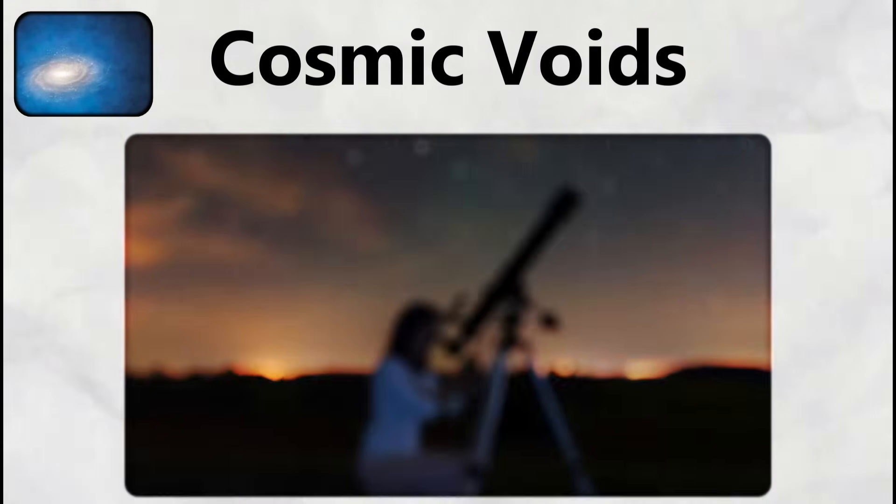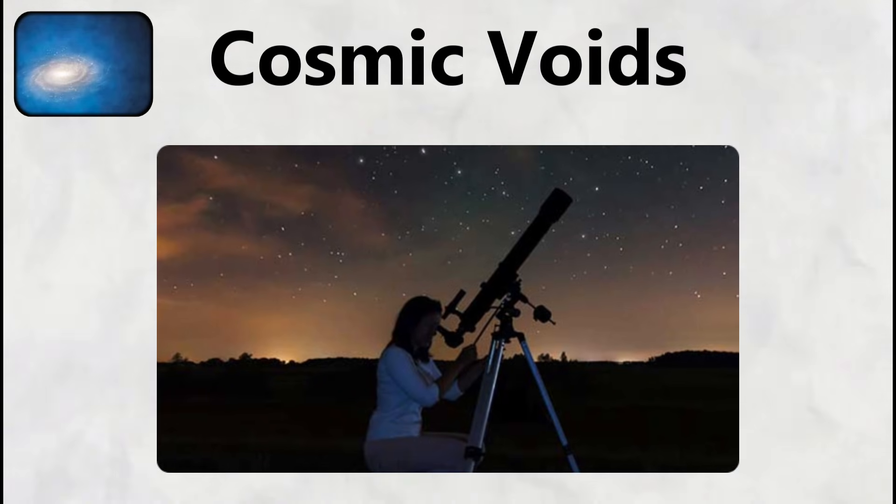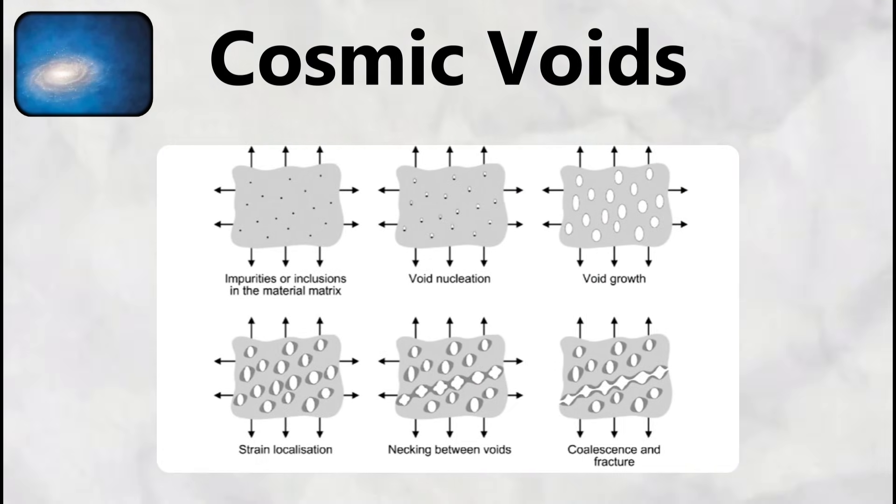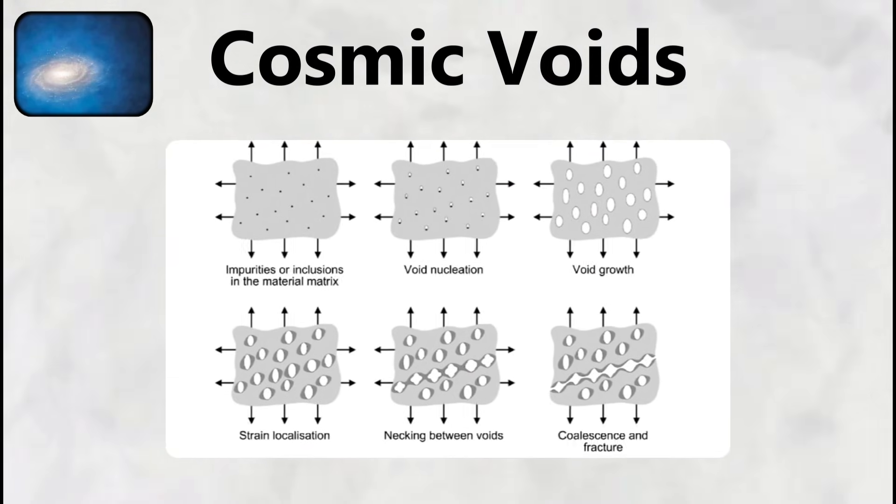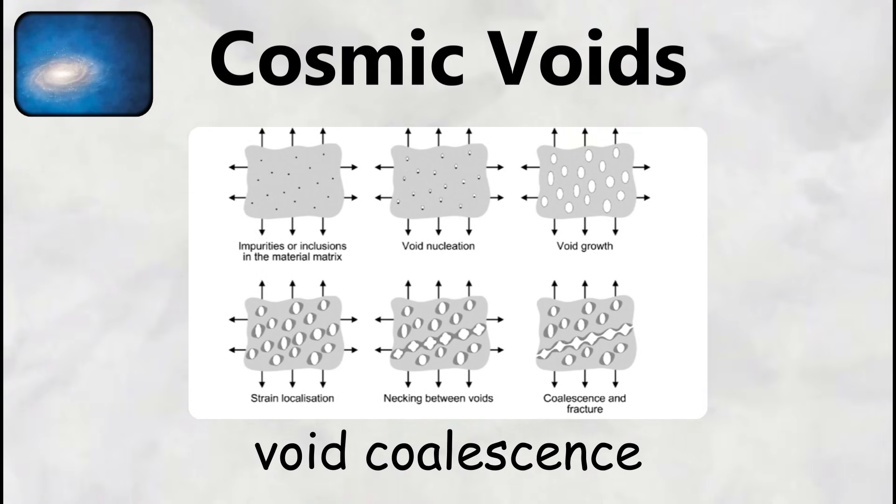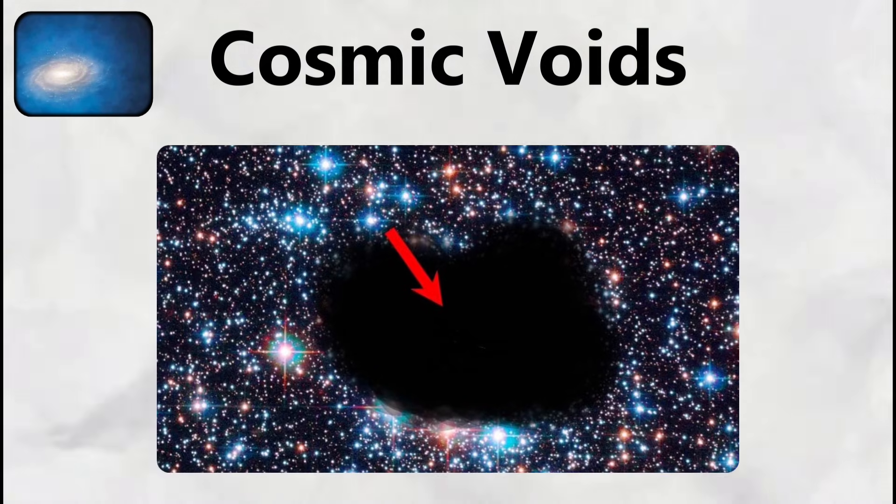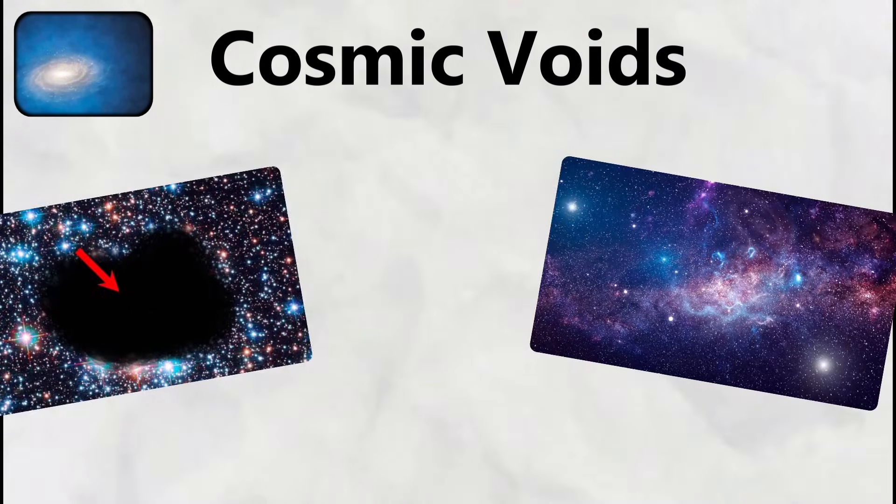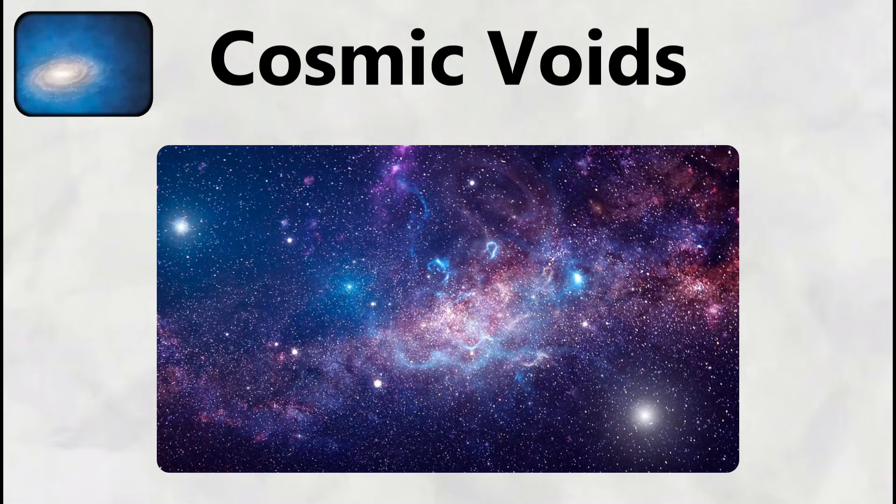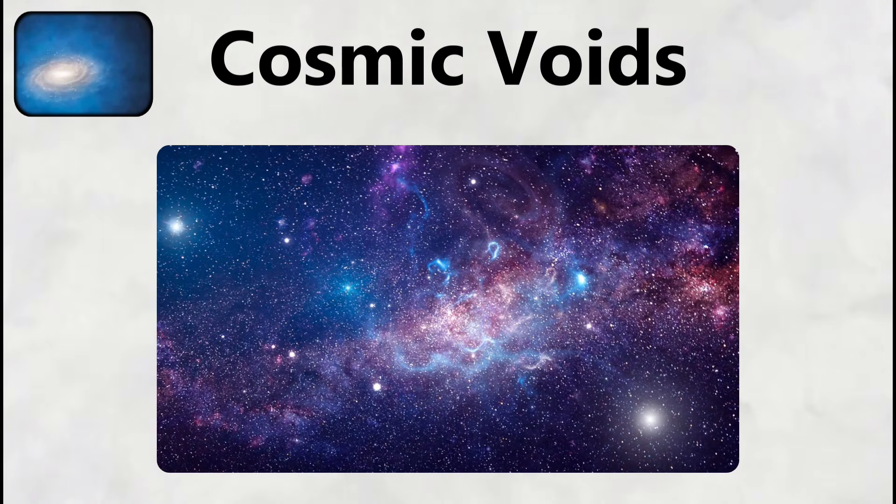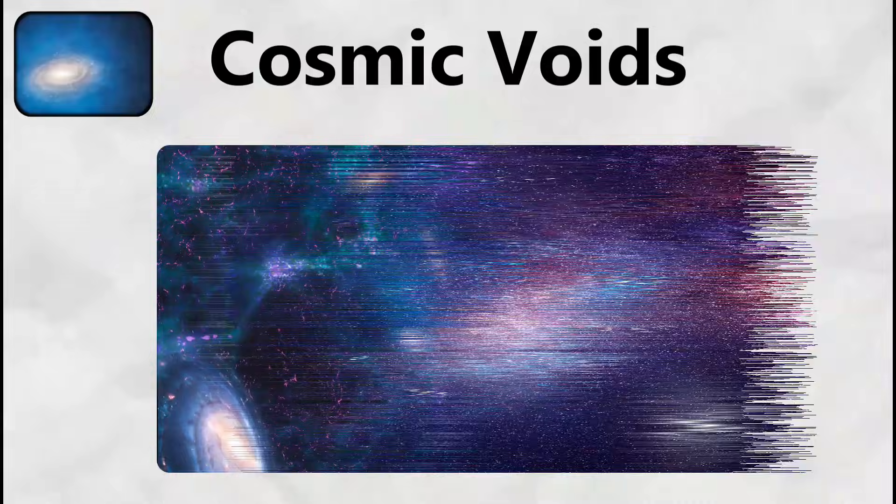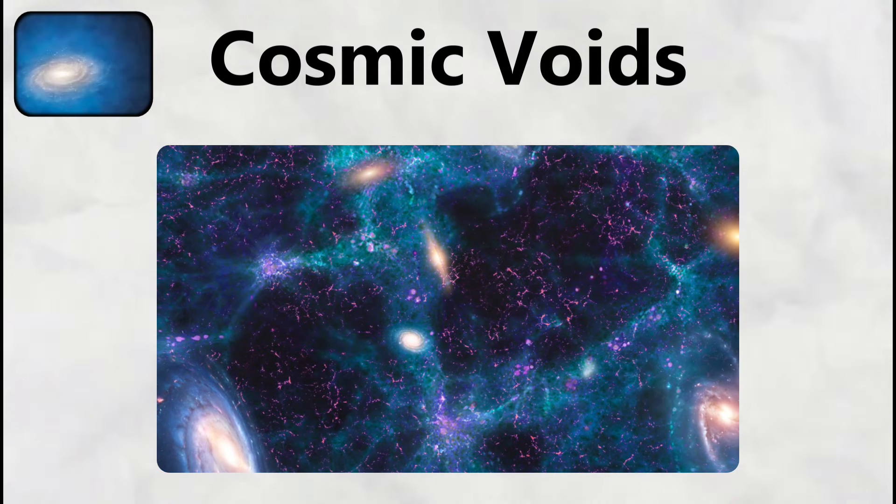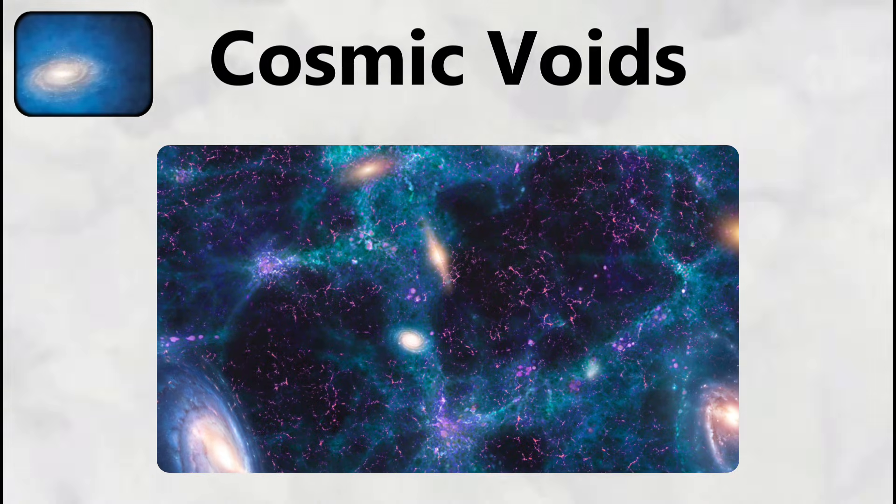Scientists believe gravitational effects during the early universe's formation created this vast emptiness by merging smaller voids together through a process called void coalescence. The Boetes Void challenges our understanding of cosmic structure, because such extreme emptiness shouldn't exist according to current models of how matter distributed itself after the Big Bang. The void is often called the Great Nothing due to how devoid of matter it is, containing less than one-tenth the normal density of galaxies expected in such a region.